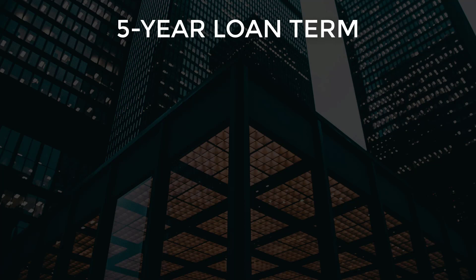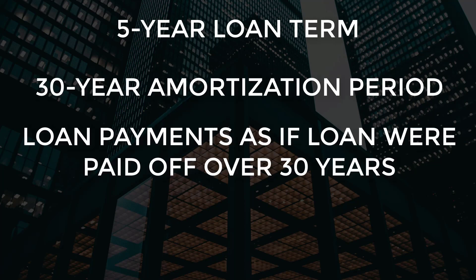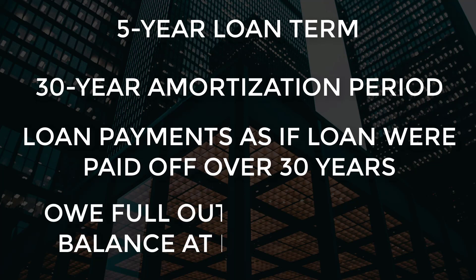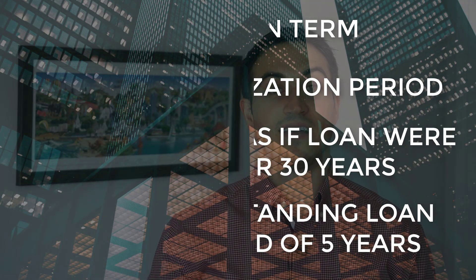So if you have a three year loan term or a five year loan term, oftentimes you'll see an amortization period or payback period of 25 or 30 years. Essentially what that means is if you have a five year loan but a 30 year amortization period, you're going to pay those loan payments as if you had to pay that back in full over a 30 year period, but you're going to owe the full principal amount at the end of that five year period.